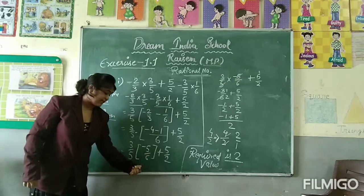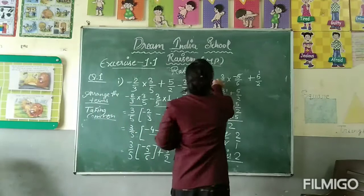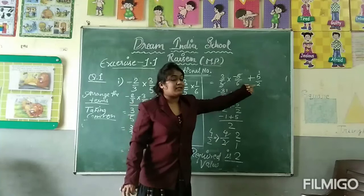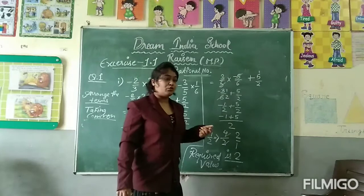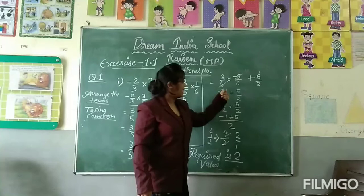Required term is 3 upon 5 bracket minus 5 upon 6 plus 5 upon 2. That is 3 upon 5 into minus 5 upon 6 plus 5 upon 2. Now canceling, 5 and 5 cancel. Our numerator is minus 3, denominator is 6. Canceling, we get minus 1 by 2 plus 5 by 2.